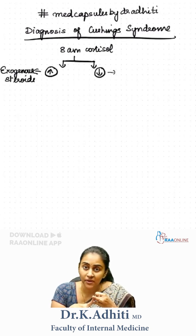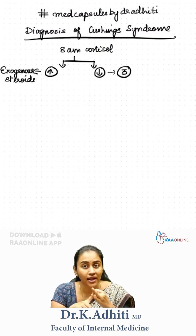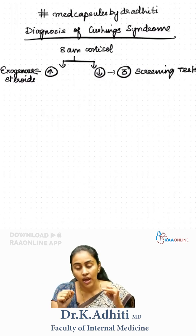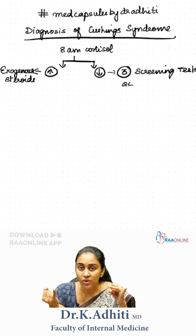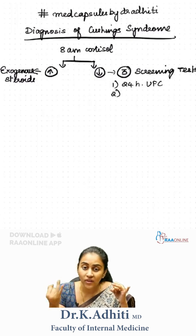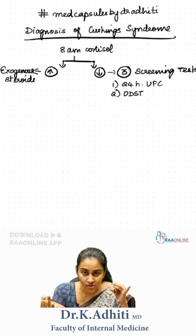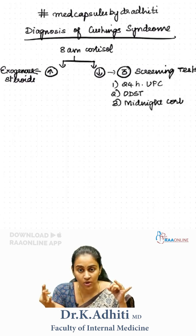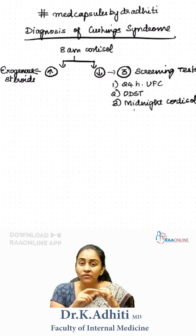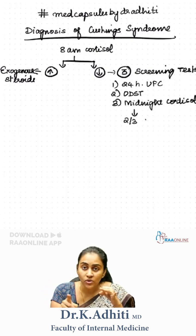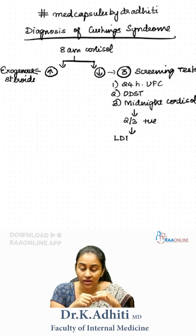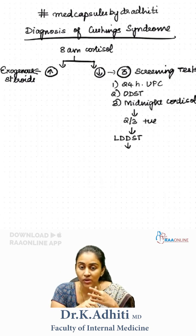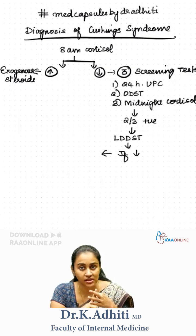But if this is going to be suppressed, then as a second step, you need to do three important screening tests: the 24-hour urine free cortisol, the overnight dexamethasone suppression test, and also the midnight serum or salivary cortisol. If any two out of these three tests are going to be positive, then we will have to confirm Cushing's with the low dose dexamethasone suppression test.